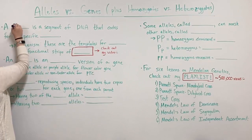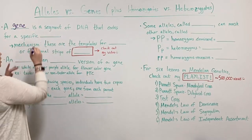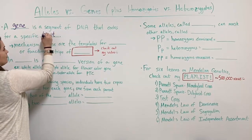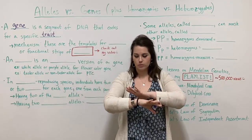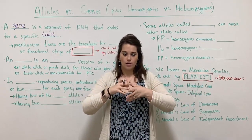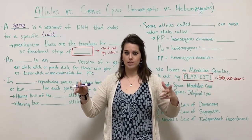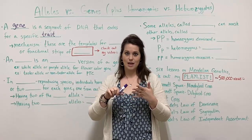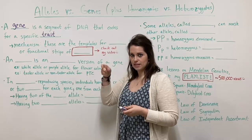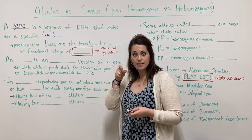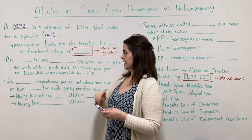A gene is a segment of DNA that codes for a specific trait. Imagine your DNA — these huge chromosomes that are very long sequences of nucleotides. Those are the letters A, T, C, G — that's adenine, thymine, cytosine, and guanine. There are discrete segments of DNA that code for a specific trait, and that's what we call a gene.